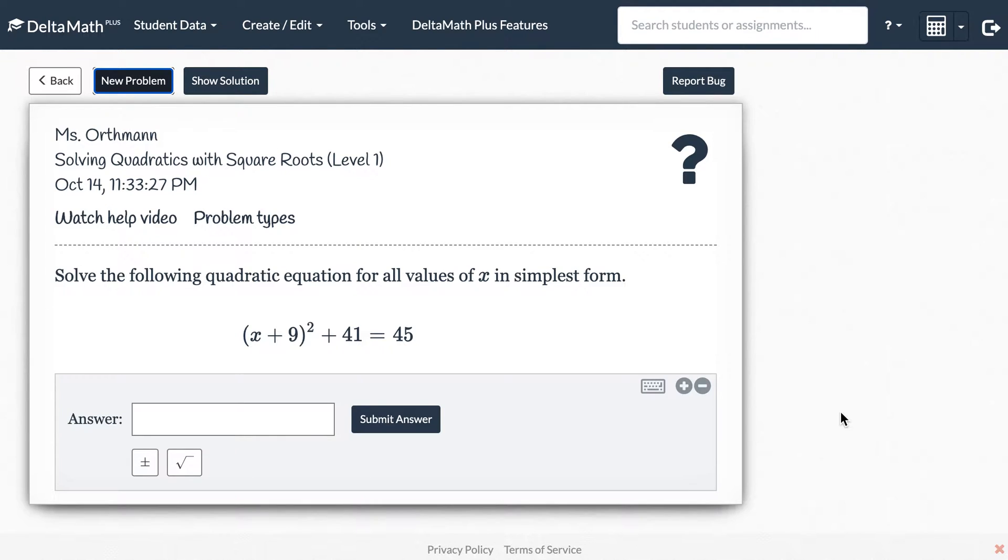Another thing to be careful with DeltaMath is that sometimes you will end up with two answers. So for example,